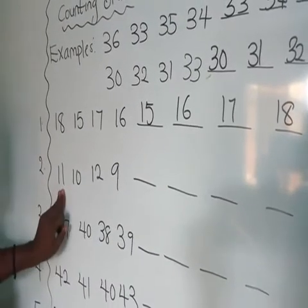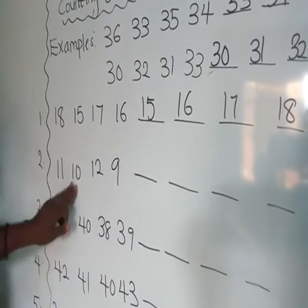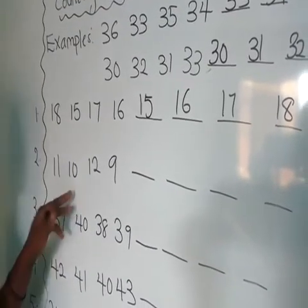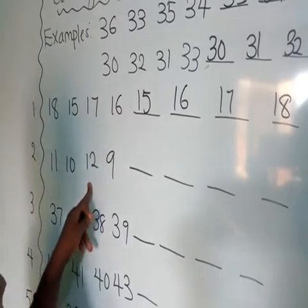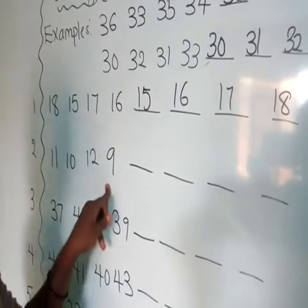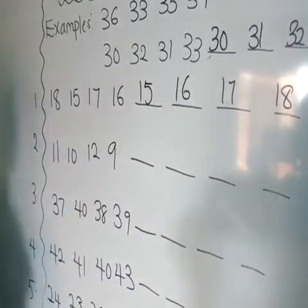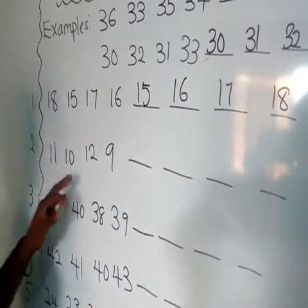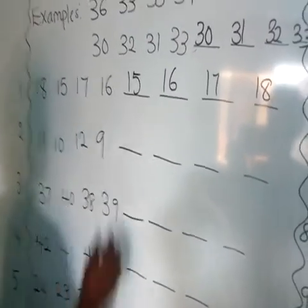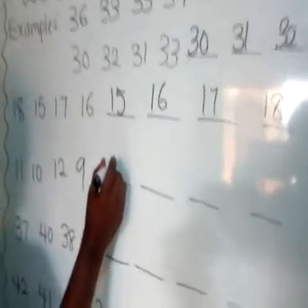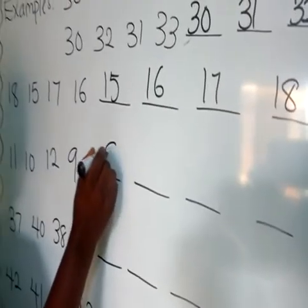Number 2 says what? 1 and 1 is 11. 1 and 0 is 10. 1 and 2 is 12. And then number 9. Which number comes first? We have number 9, then number 2.